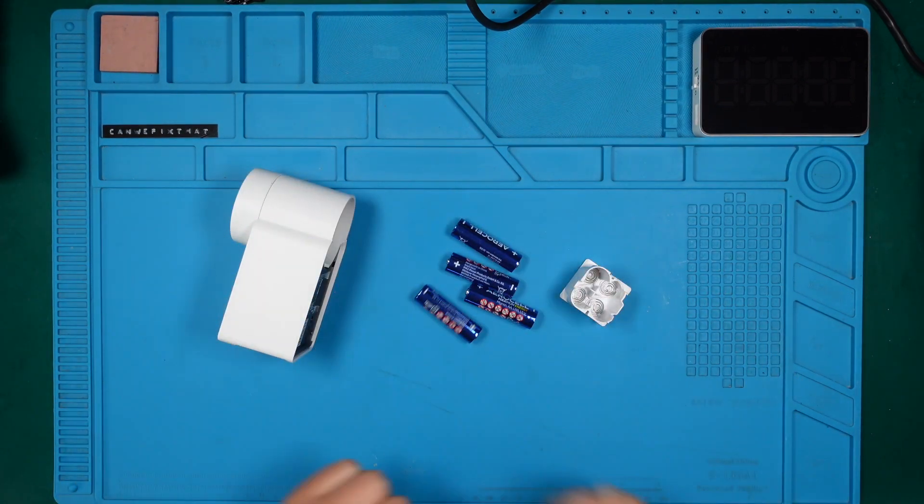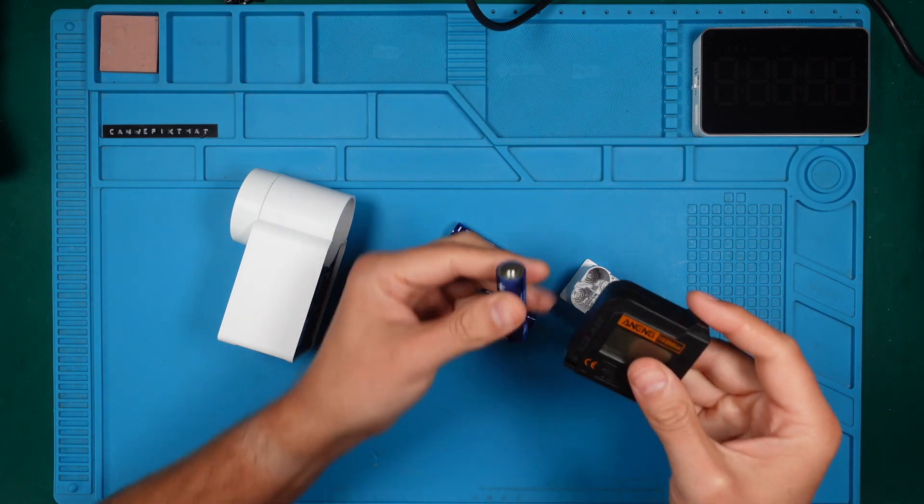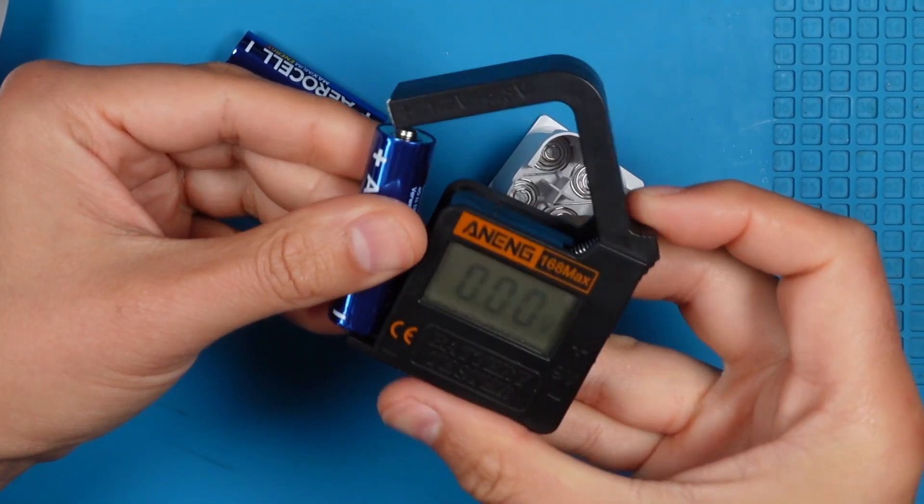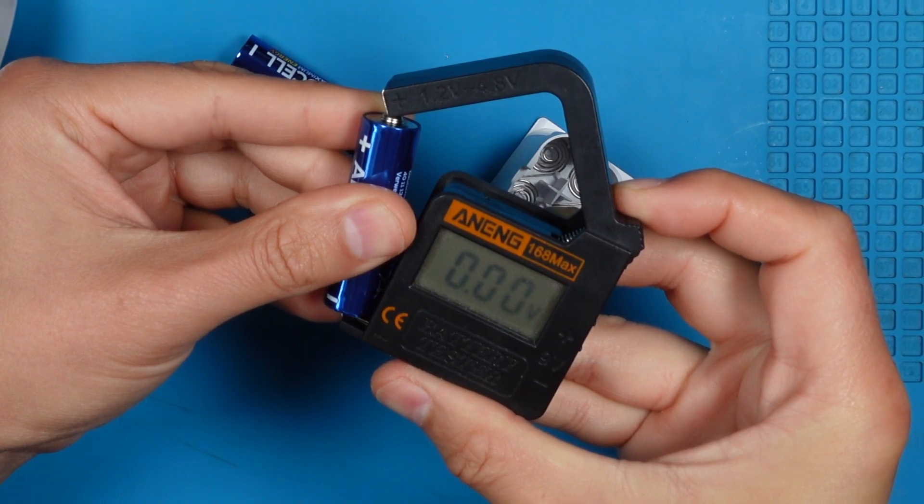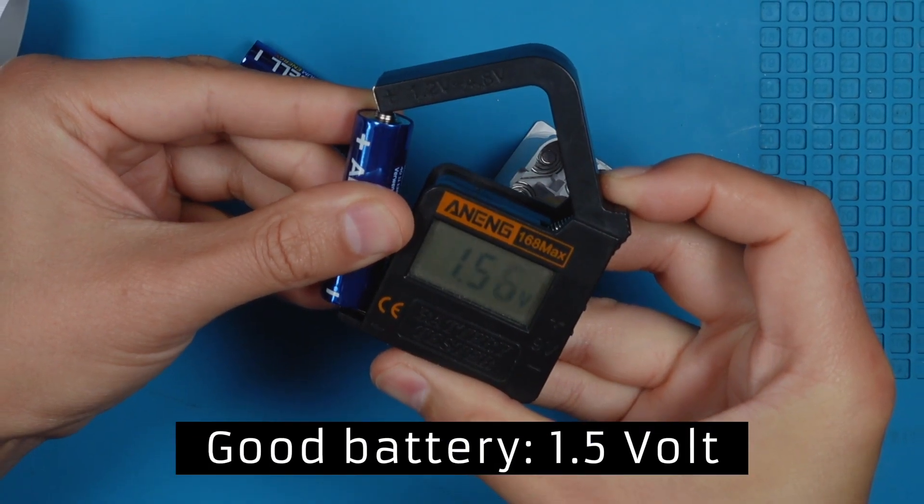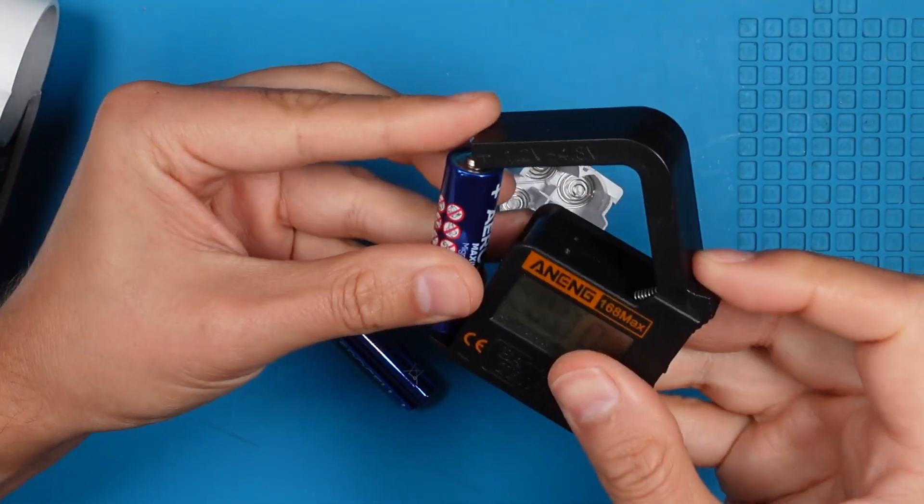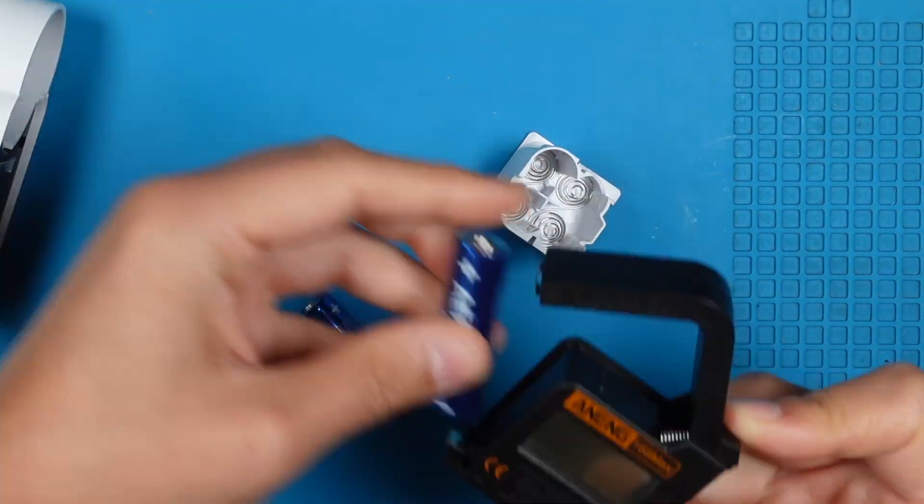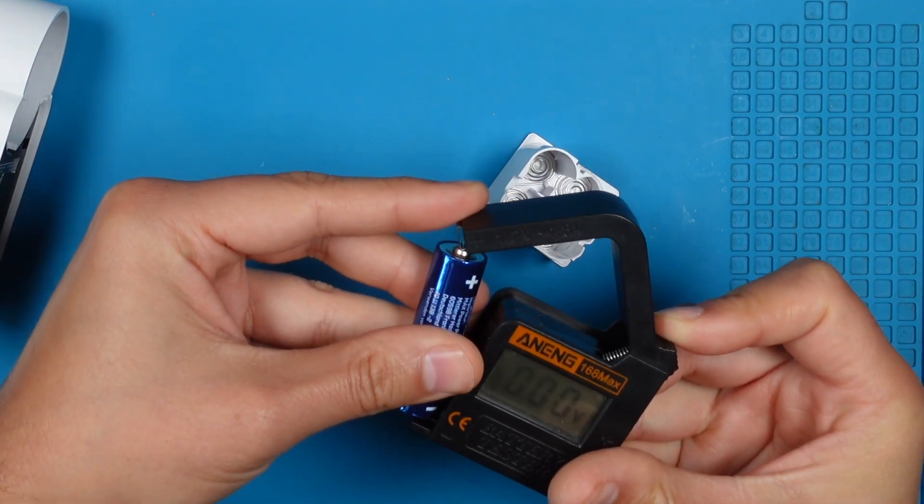Let's grab four AA batteries and check them. A good battery has approximately 1.5V. Now the rest of the batteries. Long story short, the batteries are full. Great!